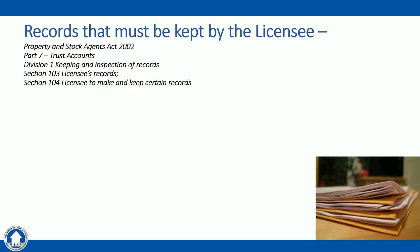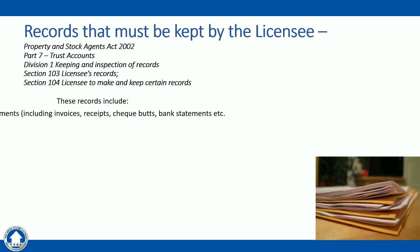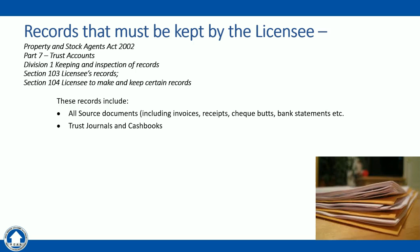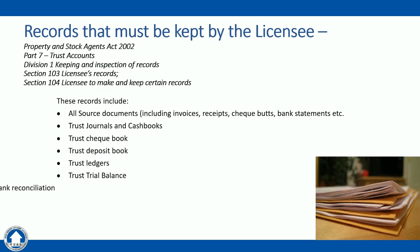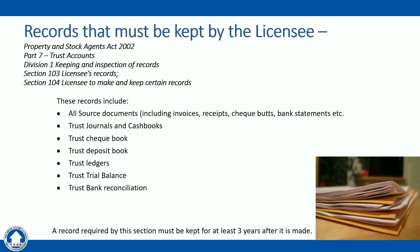If there is a difference between amounts in the trust bank account and the trust cash books, this is a discrepancy and must be identified and remedied as soon as possible. The licensee must keep certain records as covered under the Property and Stock Agents Act 2002, Part 7 Trust Accounts, Division 1, sections 103 and 104. Records to be kept include all source documents such as invoices, receipts, cheque butts and bank statements; trust journals and cash books; trust chequebook and deposit book; trust ledgers for each client; trust trial balances; and trust bank reconciliations — all kept for at least three years, though many agencies retain them for five years under ATO requirements.